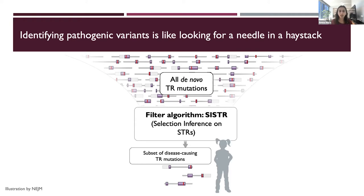One way to overcome this challenge is to look at de novo mutations in the context of natural selection, which allows us to develop a method to identify pathogenic mutations. The main idea is that the most harmful variants will have adverse effects and reduce the fitness of a person, and therefore these deleterious mutations will be selected against over time. We developed a method called SISTER to be able to do this.